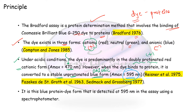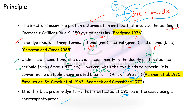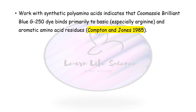The blue protein-dye complex is detected at 595 nm using a spectrophotometer. In our protocol, we are finally concerned with the blue color, which indicates successful binding of protein with the dye. We take the absorbance at 595 nm to estimate protein concentration. To summarize: the dye exists in three forms — positive, neutral, and negative. Under acidic conditions it is cationic red, but after protein binding it becomes anionic blue due to unprotonation.